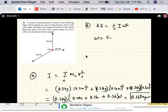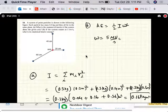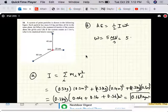So omega is given as 5 revolutions per second equal to 5 times 2 pi radians per second.